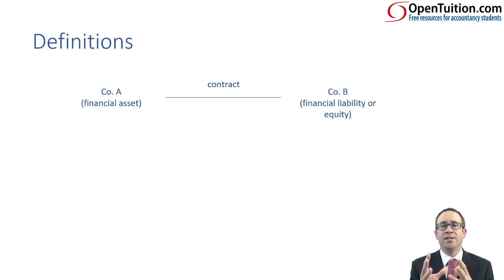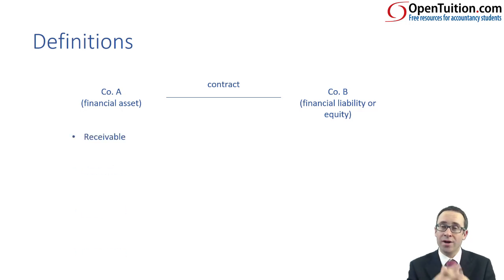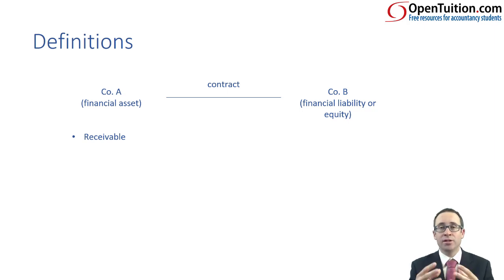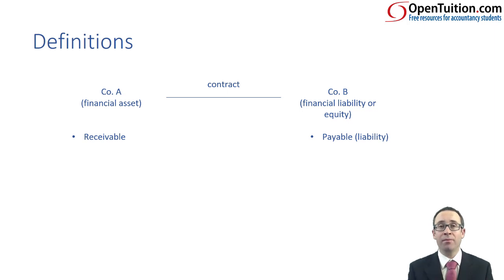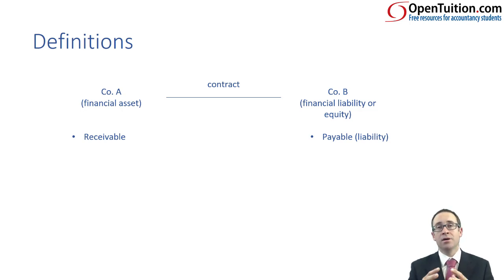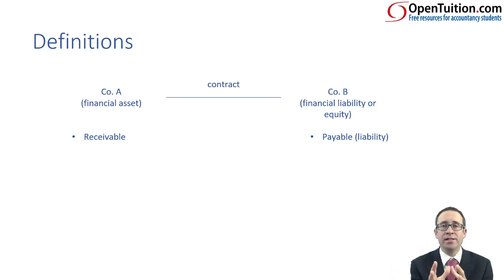Some simple day-to-day transactions give rise to financial assets and financial liabilities. In company A's books, if company A makes a credit sale to company B, company A has a receivable. That receivable is a contractual right to receive cash, which meets the definition of a financial asset. Company B has bought the goods on credit, so they have a payable — a financial liability — because there is a contractual obligation to pay cash. So just a simple everyday credit sale and credit purchase give rise to a financial instrument.